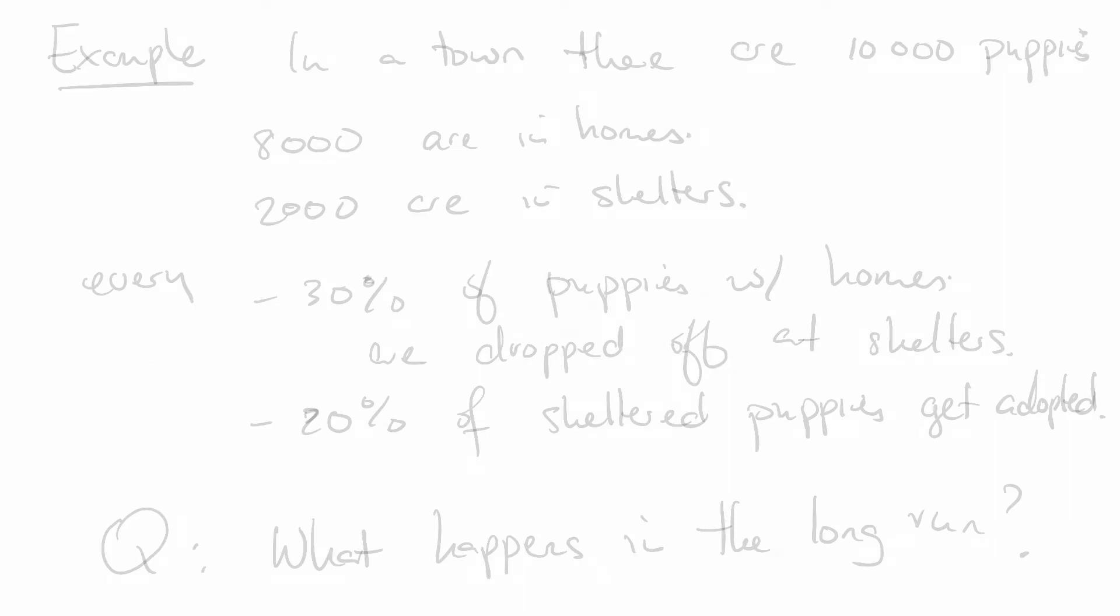Let's do an example. Say we've got a town with 10,000 puppies. And let's be a little bit more specific. We know some things. 8,000 of them are in homes and 2,000 are in shelters.